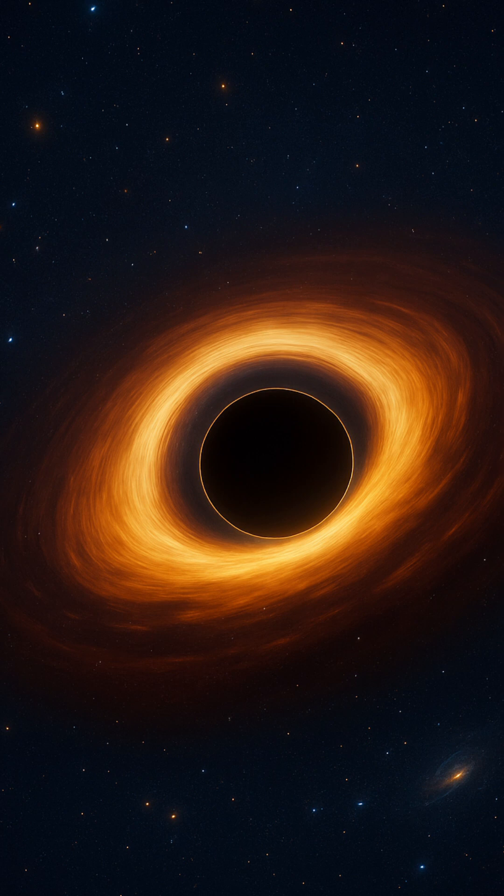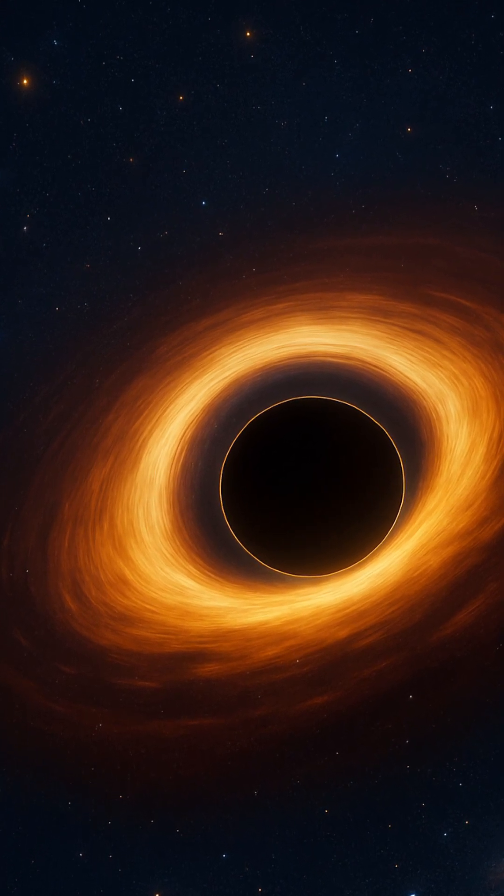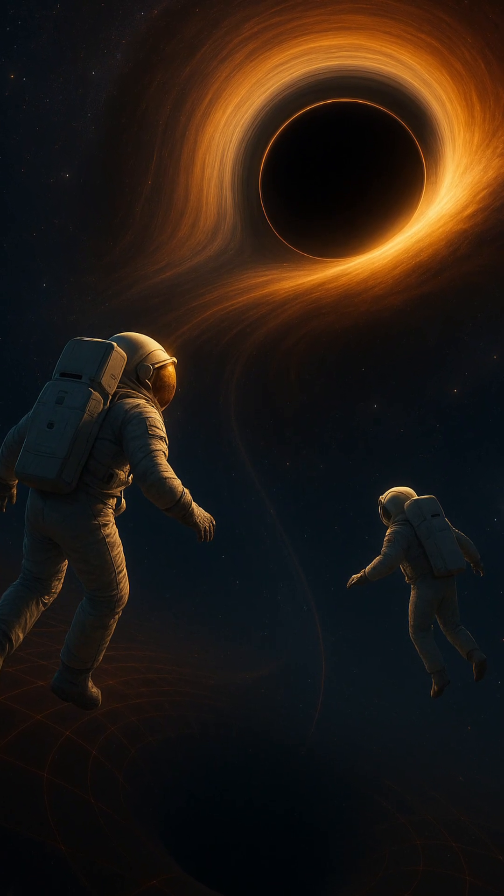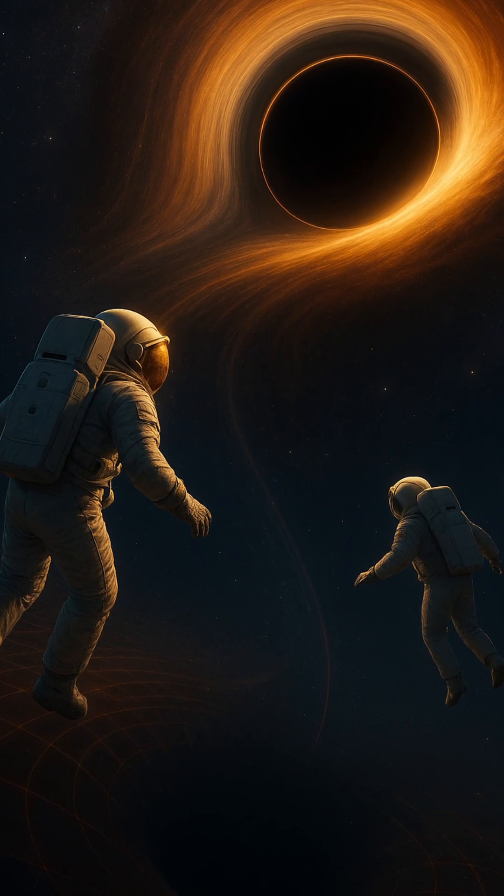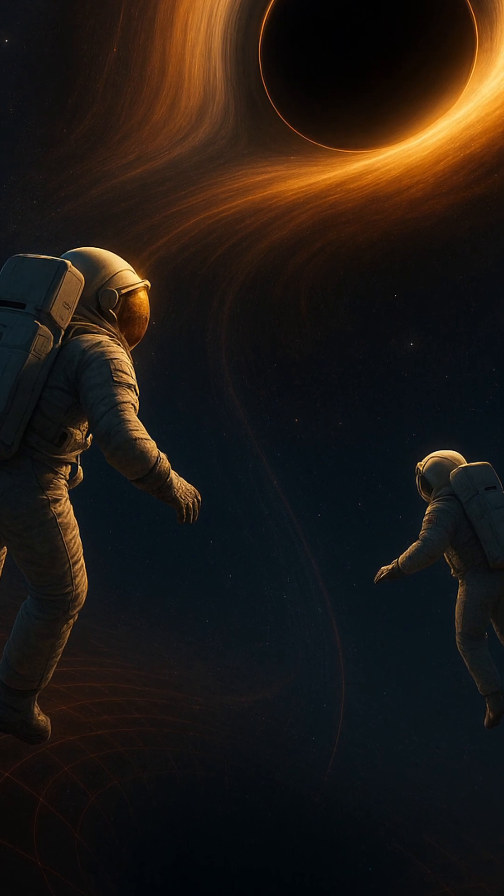Einstein's space-time is more than just a scientific idea. It's a map of reality. It tells matter how to move, and matter tells it how to curve. And through this astonishing interplay, the universe unfolds, not as a static stage, but as a dynamic living fabric shaped by everything within it.